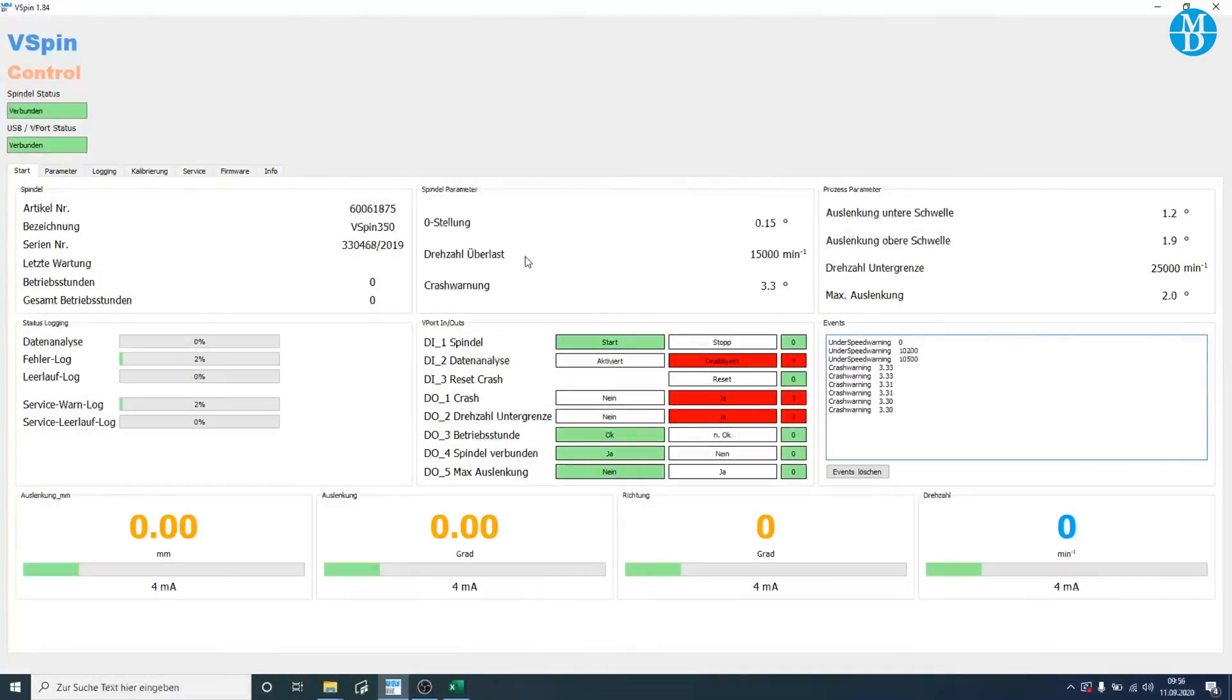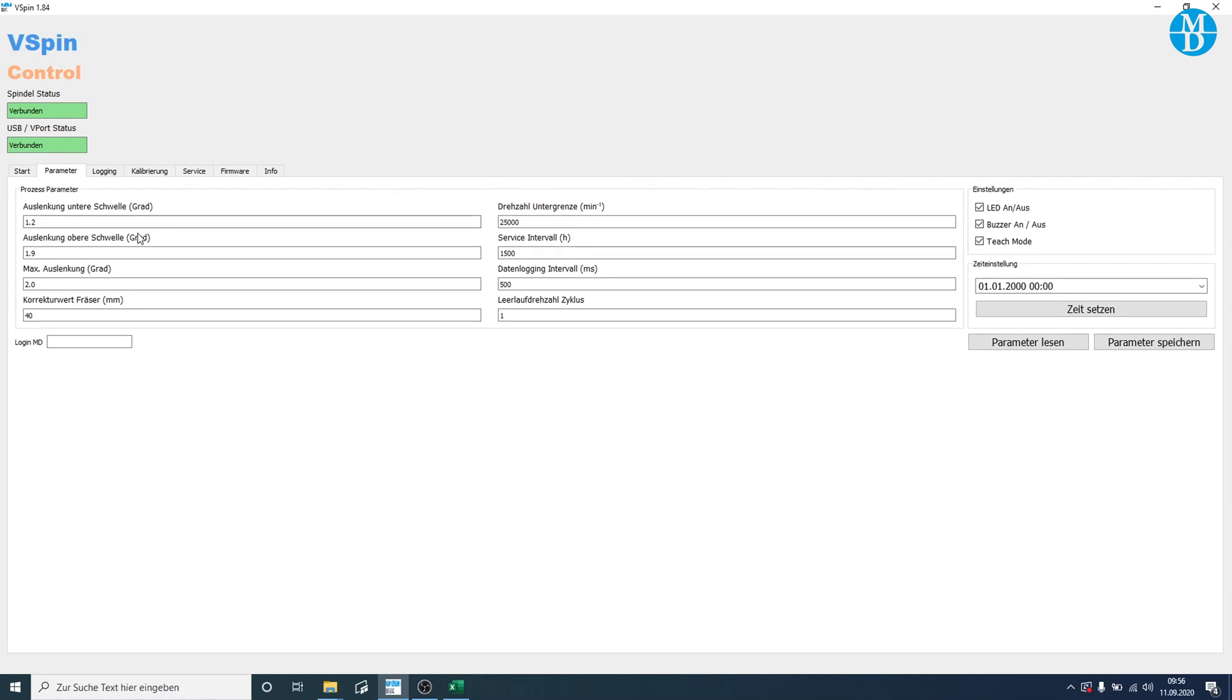We definitely know that we were in contact with the part at a low threshold of 0.9 degrees, and therefore we can now reduce the upper and lower threshold parameters by equal amounts to give us more headroom before we reach maximum deflection or worse, a crash. This provides more reaction time. Do not forget to save these new parameters.